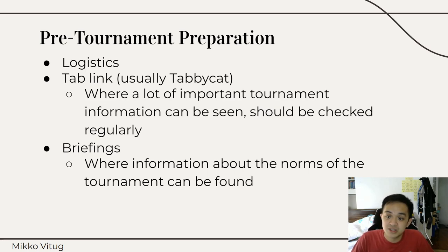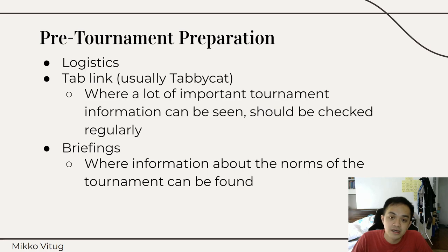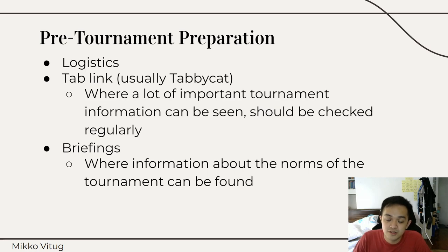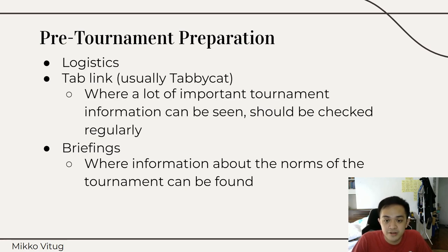Lastly is briefings. This is where information about the norms of the tournament can be found. For example, if the adjudication core wants to clarify certain rules about the tournament, they will probably say this in the briefing. If the tab team wants a specific process for how you should submit things, they will guide you on how to do that. The equity team will often provide ways in which you can raise concerns or explain the different powers they have within the tournament.